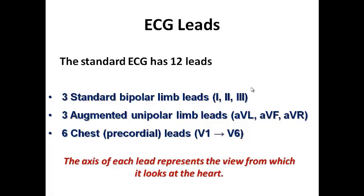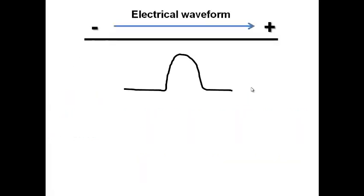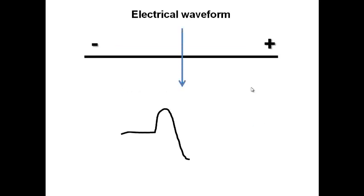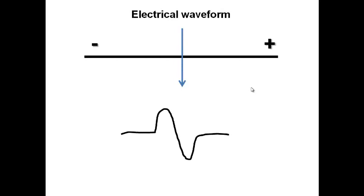The axis of each lead represents the view from which it looks at the heart. An important principle: if the electrical waveform is directed towards the positive pole of a lead, it shows a positive deflection. If directed away from the positive pole — towards the negative pole — it shows a negative deflection. If the electrical waveform is perpendicular to the lead axis, it shows a biphasic wave.